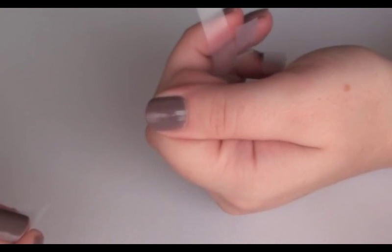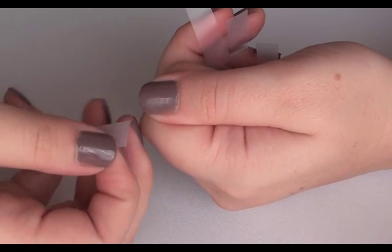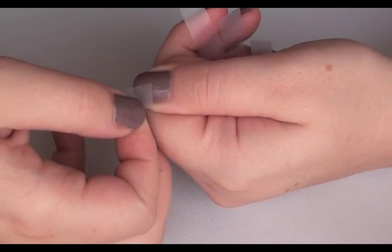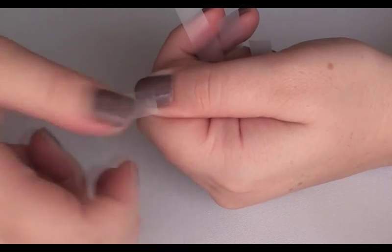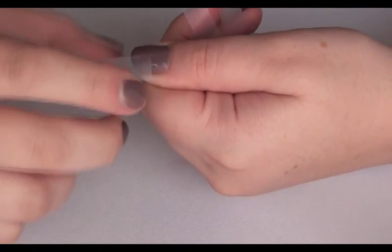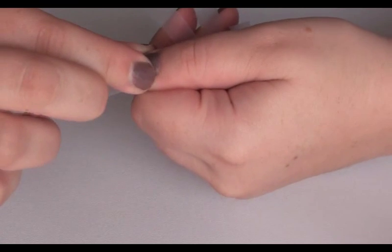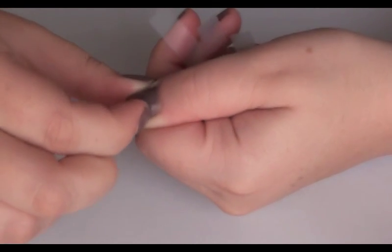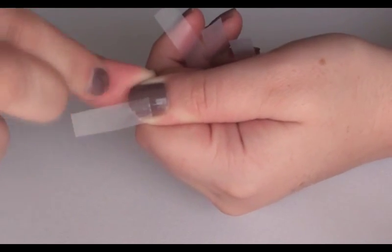So when you're applying the sticky tape to the nail, you just apply it to one corner. Just like that, and push it down. Making sure that there's no gaps where the nail polish is going to soak under.